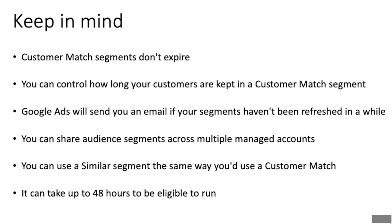Similar segments are automatically created if your Customer Match segment meets Google's minimum eligibility criteria. You can use a similar segment the same way as a Customer Match list or any other data segment, just by adding it to a campaign or ad group. When a similar segment is available, it'll show the segment size on each available network in your audience table, just like any other audience. Bear in mind it can take up to 48 hours to be eligible to run.